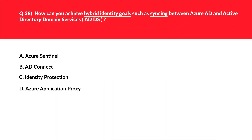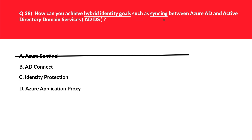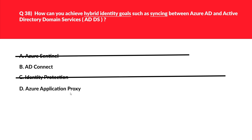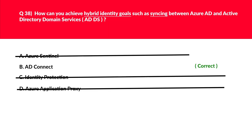This question is related to hybrid identity. Option A, Azure Sentinel, is an AI-based security service that will not help you achieve hybrid identity goals, so it's an incorrect choice. Option B, AD Connect — whenever you see keywords like 'identity goals,' 'hybrid identity,' or 'syncing,' Azure AD Connect should come to mind, so we'll keep this option. Option C, identity protection, is associated with risk detection and remediation, not syncing identities, so we reject it. Option D, Azure Application Proxy, is used for secure remote access to web applications hosted on-prem — just a distractor. The official documentation confirms AD Connect is meant for achieving hybrid identity goals.